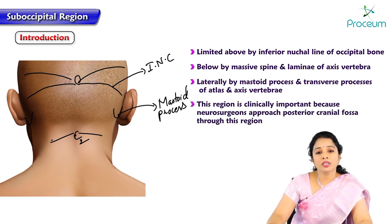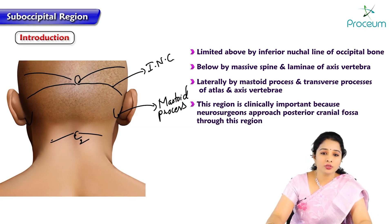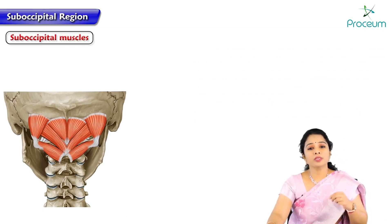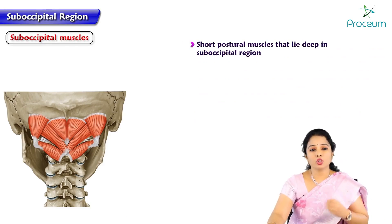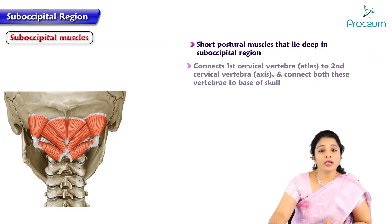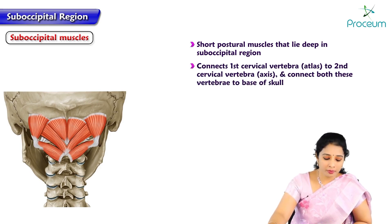This region is clinically important because neurosurgeons approach the posterior cranial fossa through this triangle. The suboccipital muscles are short postural muscles that lie deep in the suboccipital region. They connect the first cervical vertebra, that is atlas, to the second cervical vertebra, axis.